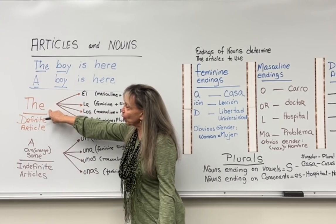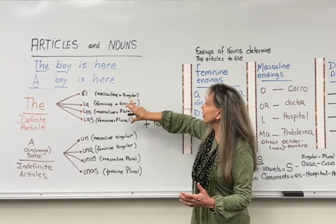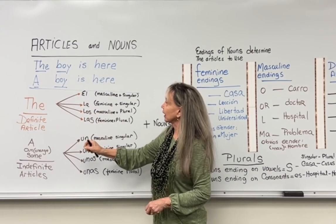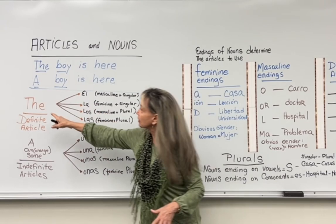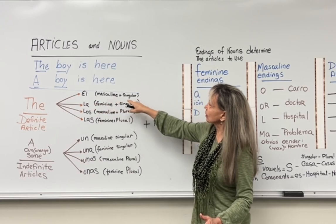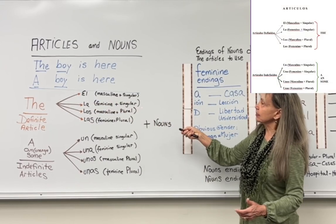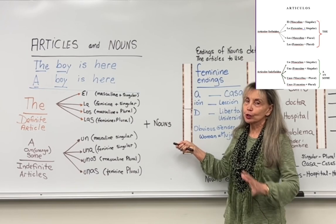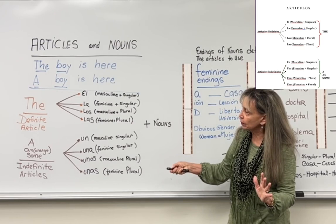So the word 'the' — the definite article — translates four things in Spanish, and it is just a matter of translation. We have to memorize and learn the translation. The translations are: el, la, los, las. El is a masculine and singular article, la is a feminine and singular article, los is a masculine and plural article, and las is a feminine and plural article. Keep that in mind as we go through the indefinite article.